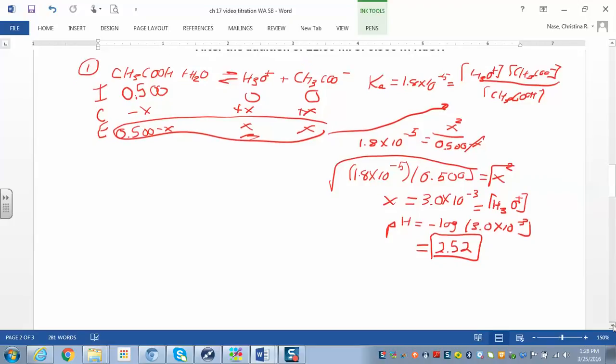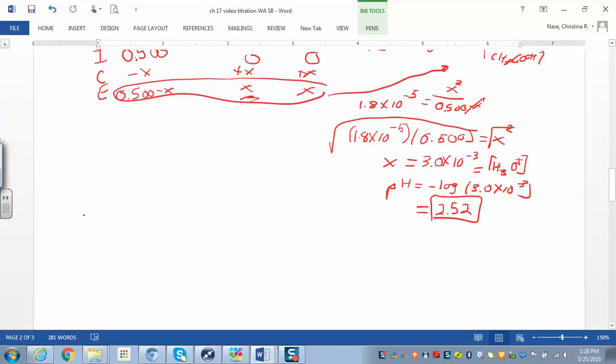And part B is going to be a little bit different. In part B, now we start adding some strong base. So we want to find the moles of the acid and the moles of the base. So you go back up. Moles of acid is going to be the molar concentration, which is 0.5 molar. And the volume that we're using is 20 mL, which is 0.020 liters. What do we get? 0.01 moles of acetic acid.